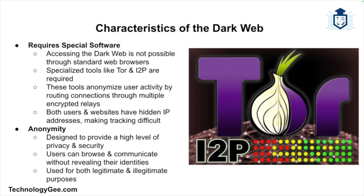Accessing the dark web requires special software such as Tor (The Onion Router) or I2P (Invisible Internet Project). These tools anonymize user activity and hide the IP addresses of both users and websites, making it difficult to trace their activities. The dark web is designed to provide a high level of anonymity to its users, and this anonymity can be used for both legitimate and illegitimate purposes, making it a haven for those seeking privacy or those engaged in illegal activities.